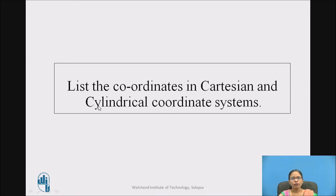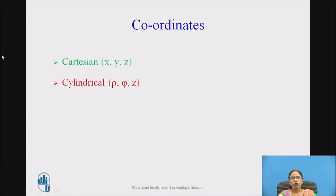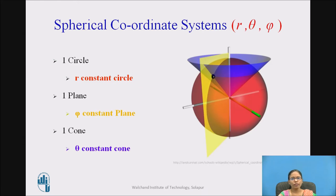Learning outcomes we have seen. Now let us go for the next part. List the coordinates in Cartesian and Cylindrical coordinate system. I have already uploaded the videos on Cartesian and Cylindrical coordinate system — just revise and list those coordinates. The coordinates in Cartesian coordinate system are x, y, z, and the coordinates in Cylindrical coordinate system are rho, phi, z. So today in this video, we are going to see the spherical coordinate system which has coordinates r, theta, phi.